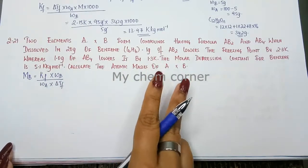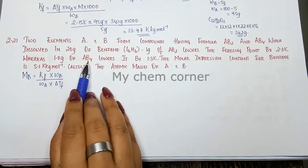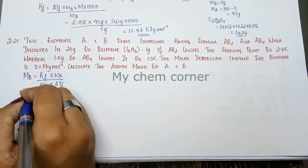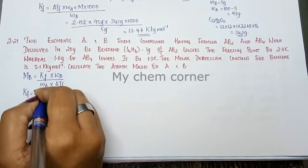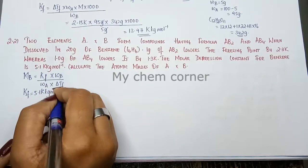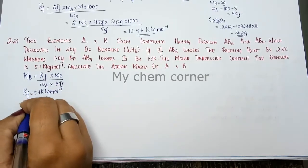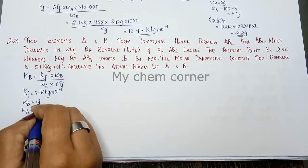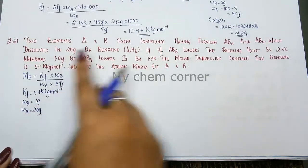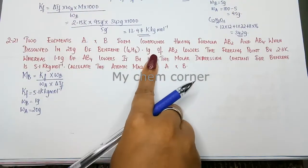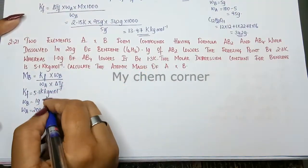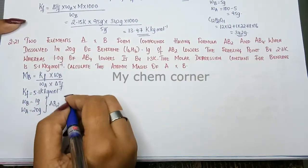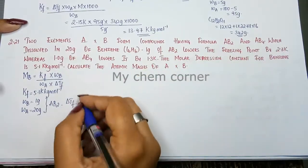Now in this case we have two solutes. One is AB2, the other one is AB4. So two different solutes, two different circumstances is what we are going to see. So from this we have Kf value which is constant 5.1 Kelvin kilogram per mole. We have Wb for first instance which is 1 gram and Wa which is going to be 20 grams. So in this case we are going to calculate for AB2 type. So when we look for AB2 type its respective delta Tf is also given as 2.3 Kelvin.